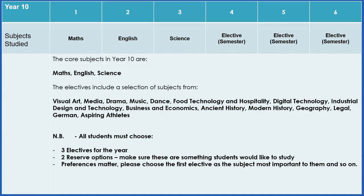Year 10 next year will be having three core subjects — that's Maths, English, and Science — followed by three electives to choose. The electives can range from anything. There's a whole list you can see on the screen: Visual Art, Media, Drama, Digital Technology, Aspiring Athletes, Design, and so many more options.